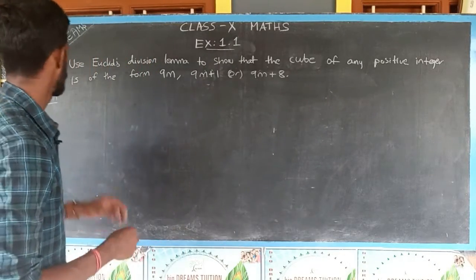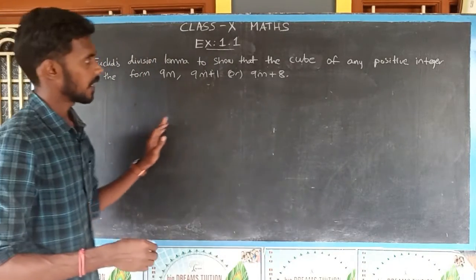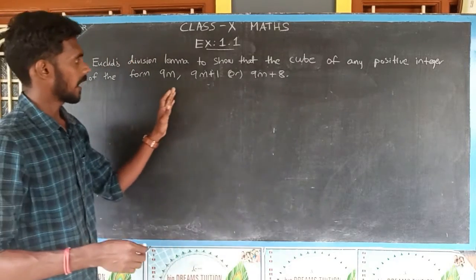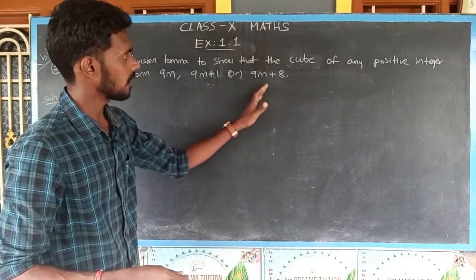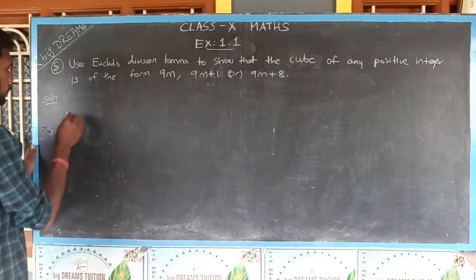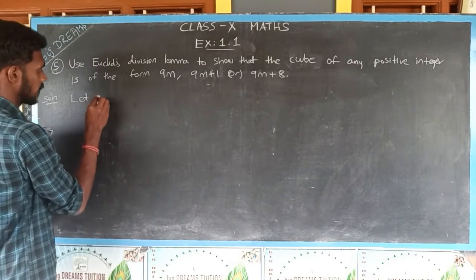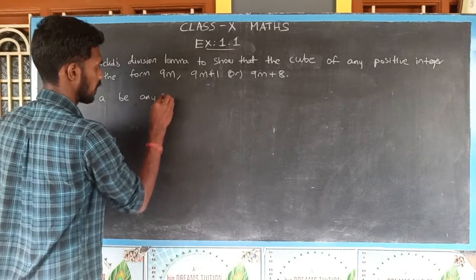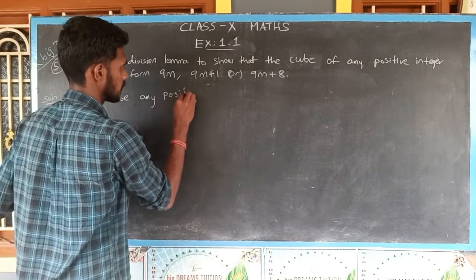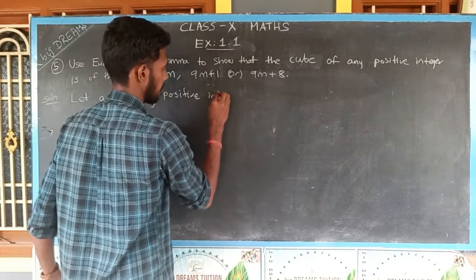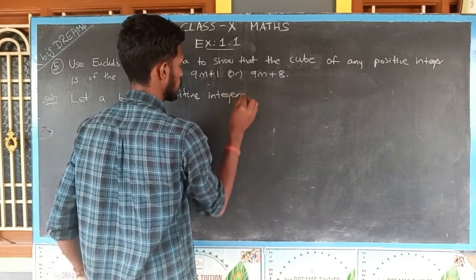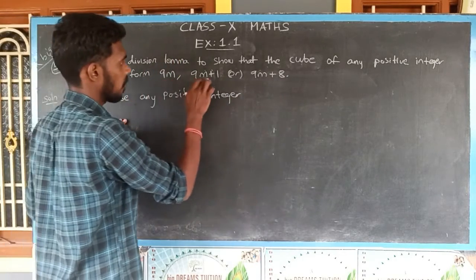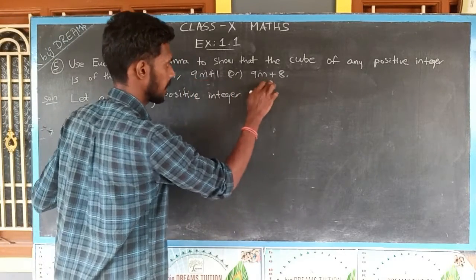Students, next let us see the fifth question. Use Euclid's division lemma to show that the cube of any positive integer is of the form 9m, or 9m plus 1, or 9m plus 8.